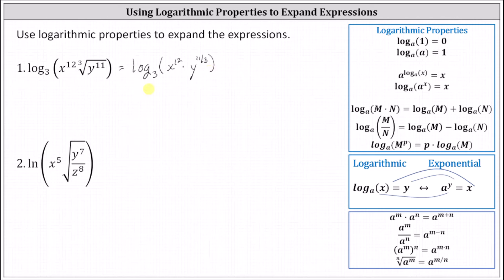And now because we have log base three of our product, we will expand using the product property of logarithms, which is log base a of the product of m and n is equal to log base a of m plus log base a of n. This indicates log base three of the product of x to the 12th and y to the 11 thirds equals log base three of x to the 12th plus log base three of y to the 11 thirds.